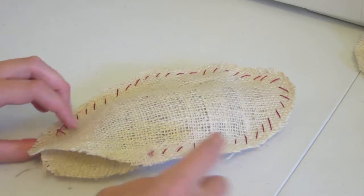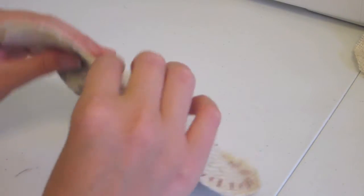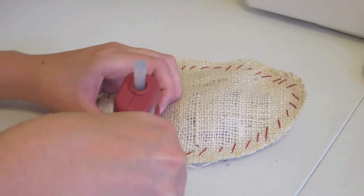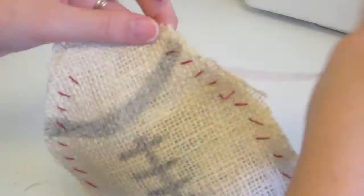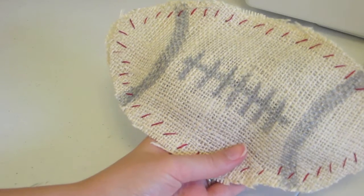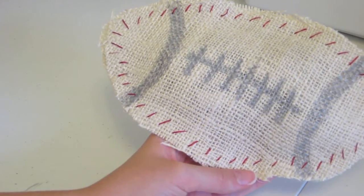I'll do the exact same thing for the stitching to finish it off along this edge. Now I'm done with one football. I'll do this for all of the footballs I want to put on my banner.